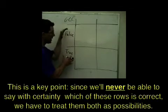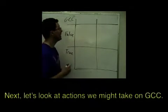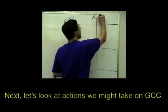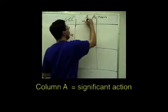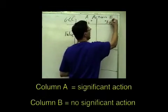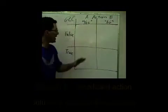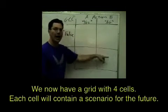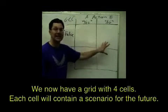At this point we all agree these are both possibilities. The second thing to look at is what action on climate change do we take? Let's make column A yes for significant action and column B no for little to no significant action. What that gives us is a grid with four boxes, each box representing a basic scenario for the future.